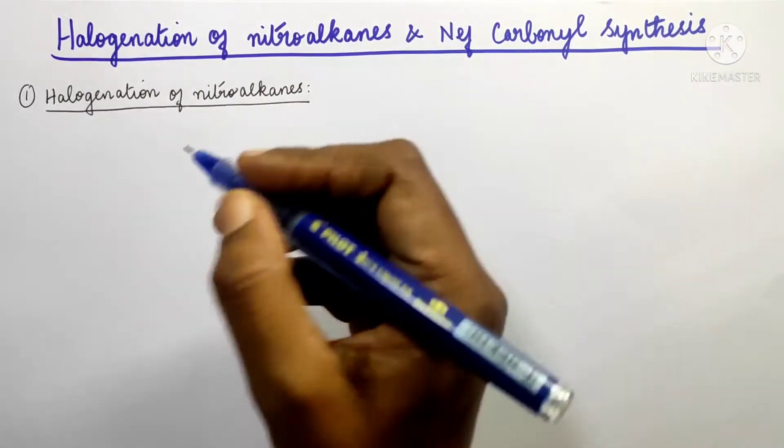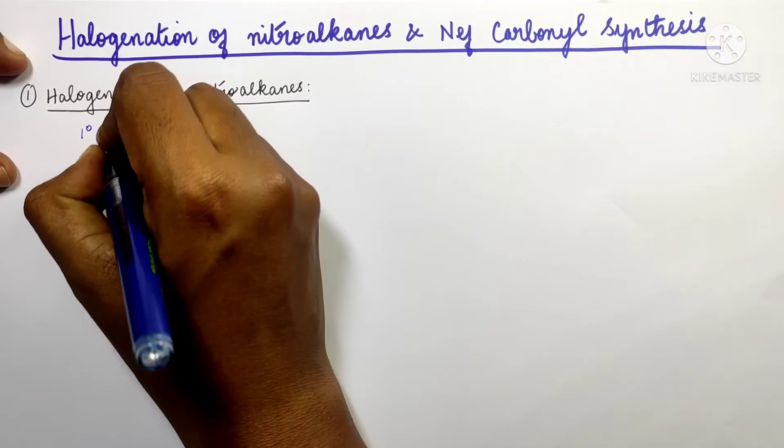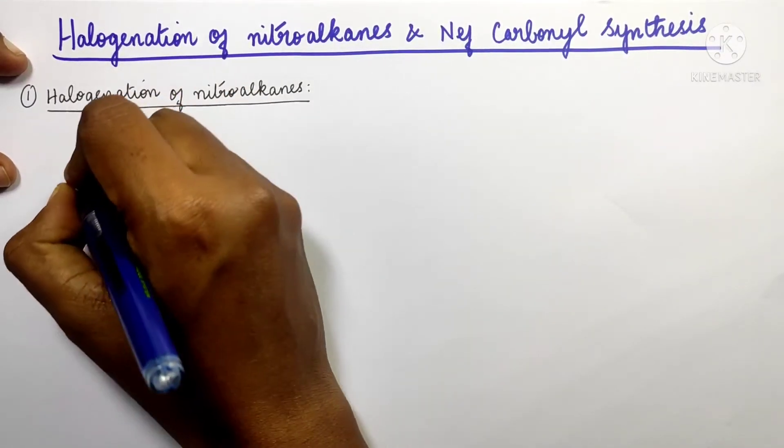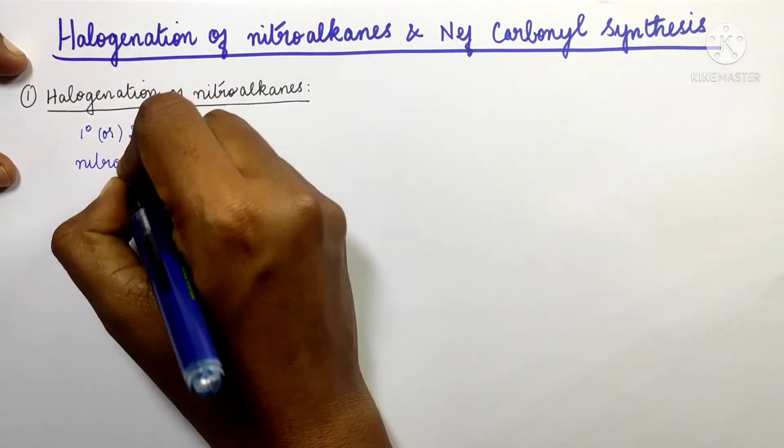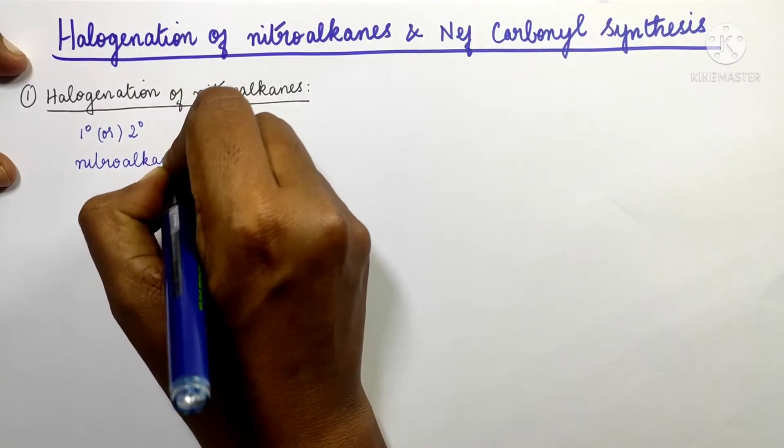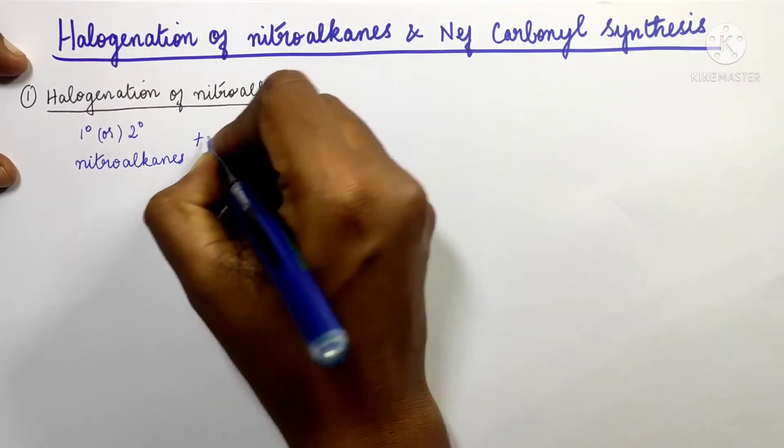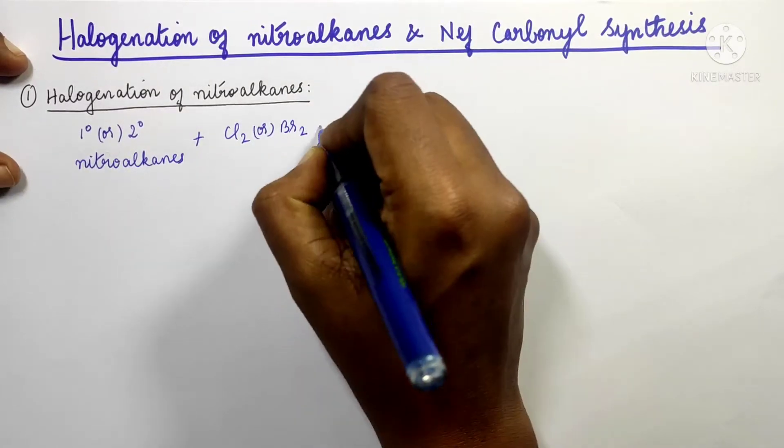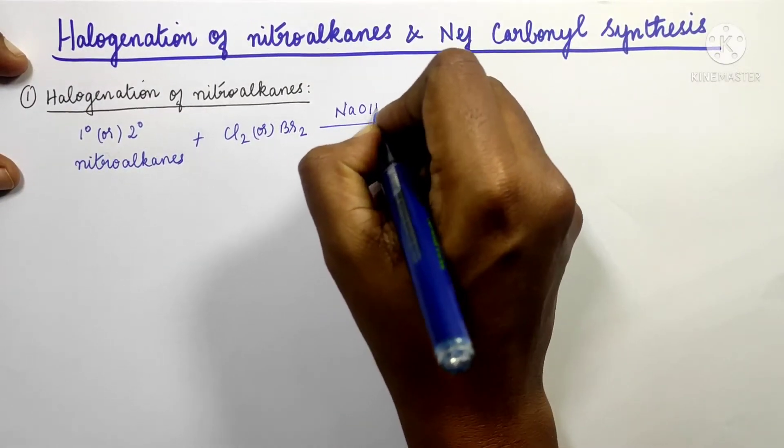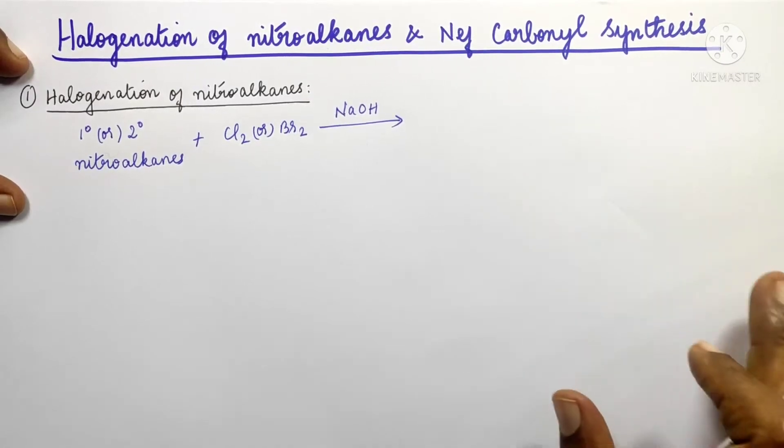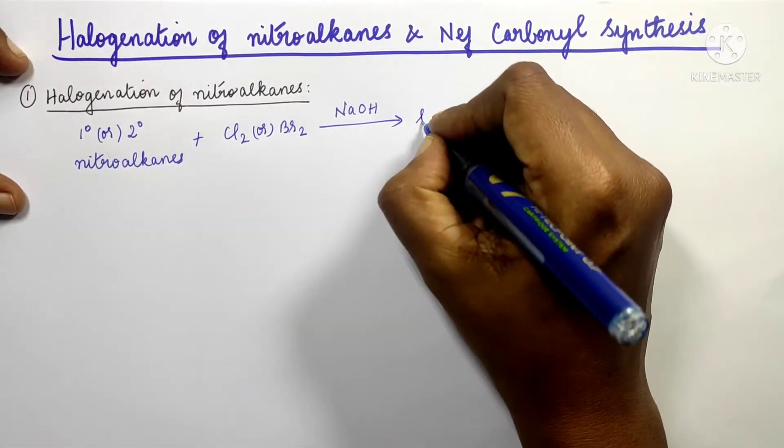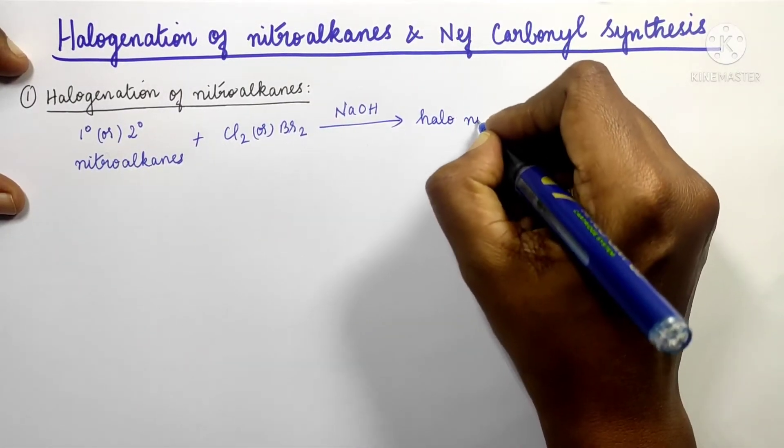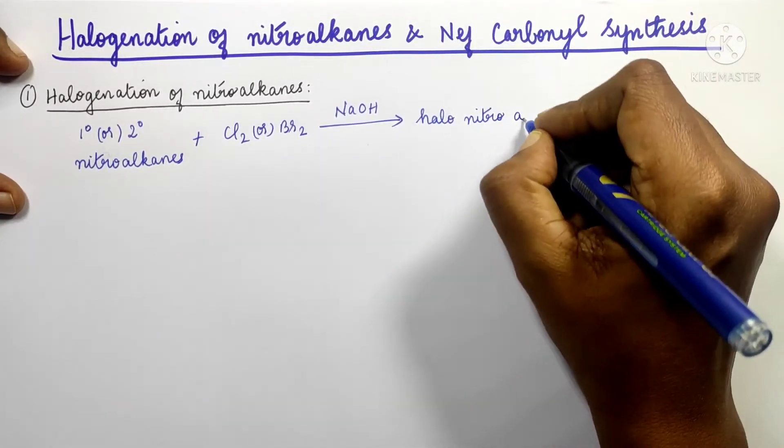In this reaction, primary or secondary nitroalkanes are taken, and chlorine or bromine is passed in the presence of sodium hydroxide. This results in halogenation of nitroalkanes.